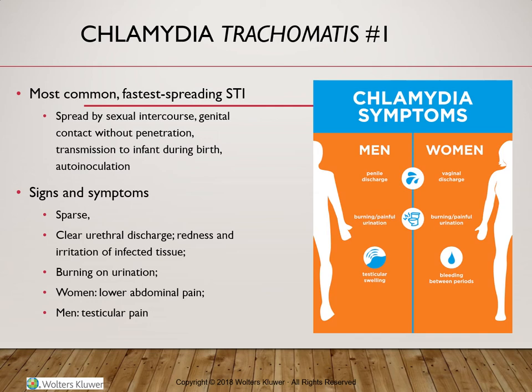Untreated, the condition can lead to sterility, mainly in women, as a result of scarring tissue at the level of the reproductive system. An infected pregnant woman can transmit the microorganism to the baby, mainly during birth. There is another type of spread called auto-inoculation or self-transmission, by touching the face and eyes with unwashed hands, which can spread the infection to the eyes.